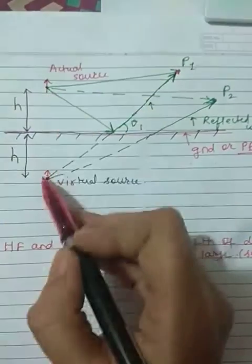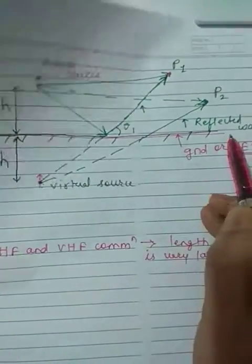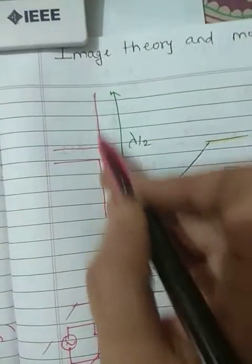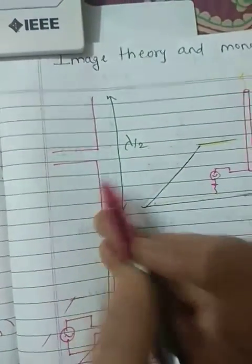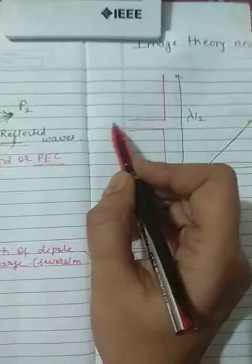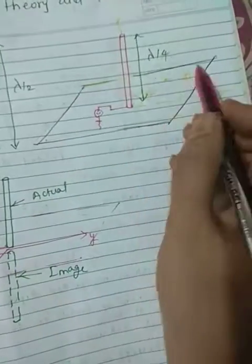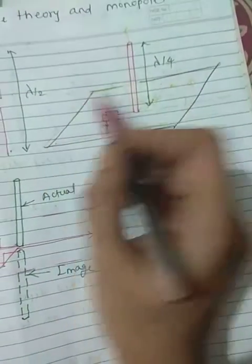So as we have seen in image theory, we can replace two sources by one source and ground. In the same way, if we use only one pole from these two poles, so one pole it is called monopole, and we have inserted ground plane in between. So a monopole is situated on this infinite ground plane.